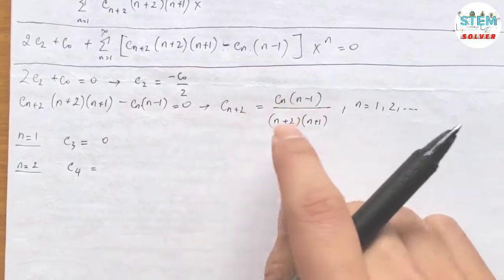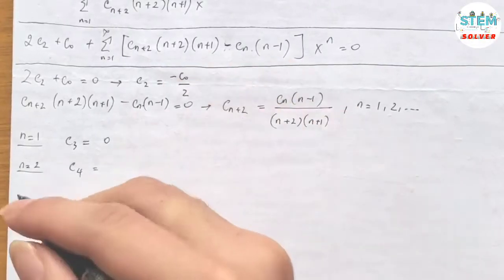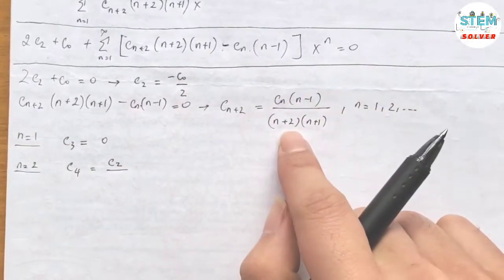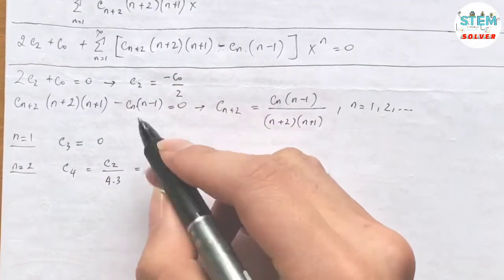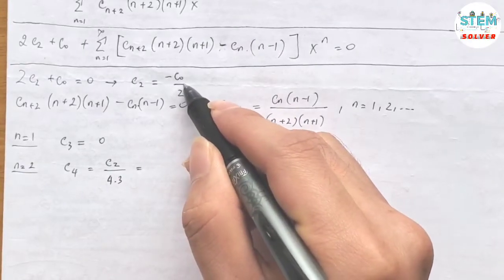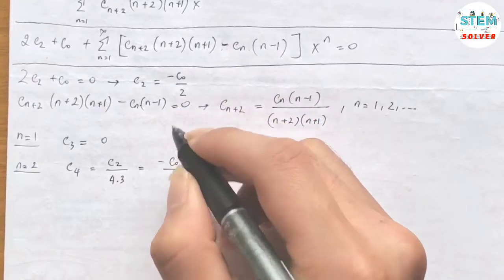When n equals 2, we have c4 equals c2 over 4 times 3, which is 12. And then c2 is negative c0 over 2. So I have negative c0 over 24.